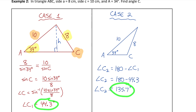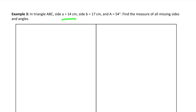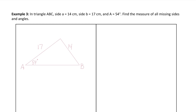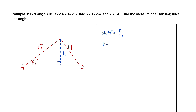We wouldn't know which of those two possible answers angle C actually is — it's ambiguous. Now for the last example: given two sides and an opposite angle, but this time we need to find all missing sides and angles. Let me draw one possible triangle with those three pieces of information. The side across from the given angle is 14, which is less than the other known side of 17. Checking the height: sine 54 equals H over 17, so H equals 17 times sine 54, which is about 13.8. Since side A (14) is bigger than the height but less than B (17), we have to consider the ambiguous case.